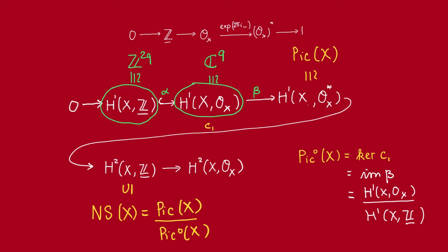But we have an explicit description of this cohomology group, where q here is the irregularity. Remember, it was defined to be the dimension of this.